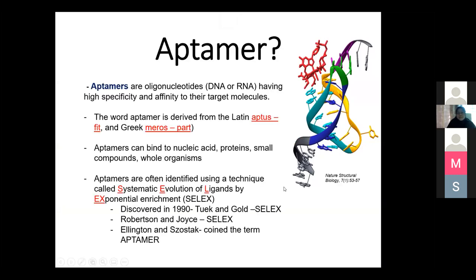Basically, aptamers are oligonucleotide molecules capable of recognizing their own targets with high specificity and affinity. They are basically DNA or RNA, around less than 100 bases — normally from 15 to 60 bases. That is the best aptamer sequence length. The term 'aptamer' is derived from Latin and Greek words: 'aptus' meaning 'fit' and 'meros' meaning 'part' or 'particle'.